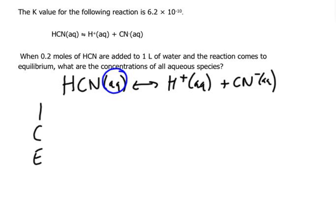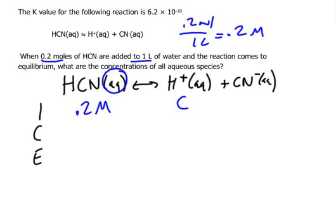What is told to us? We know at the start, 0.2 moles of HCN is added to 1 liter of water. So 0.2 moles out of 1 liter — that is 0.2 molar. So that is our initial concentration of HCN: 0.2 molar. And we can usually assume our concentration of the products is 0, because it's not told to us otherwise.